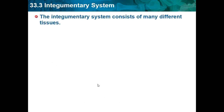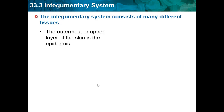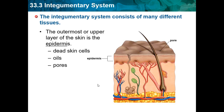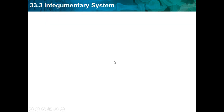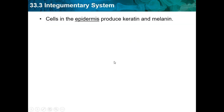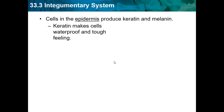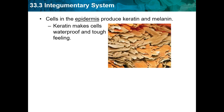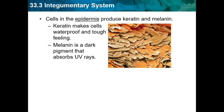The integumentary system consists of many different tissues. The outermost layer of the skin is the epidermis — made of dead skin cells, oils, and it has pores. Cells in the epidermis produce keratin and melanin. Keratin makes cells waterproof and tough, and melanin is a dark pigment that absorbs UV rays.